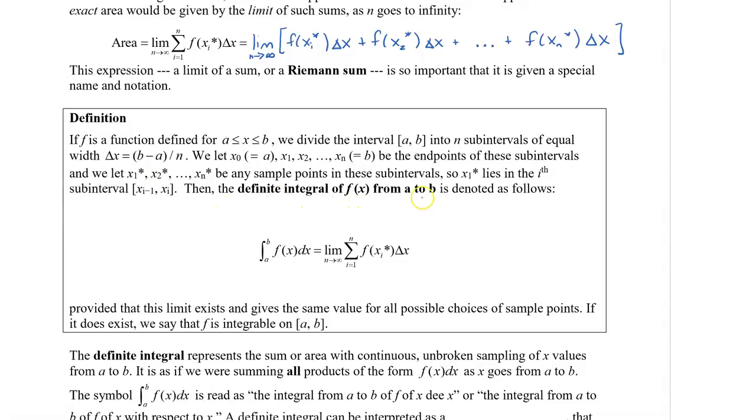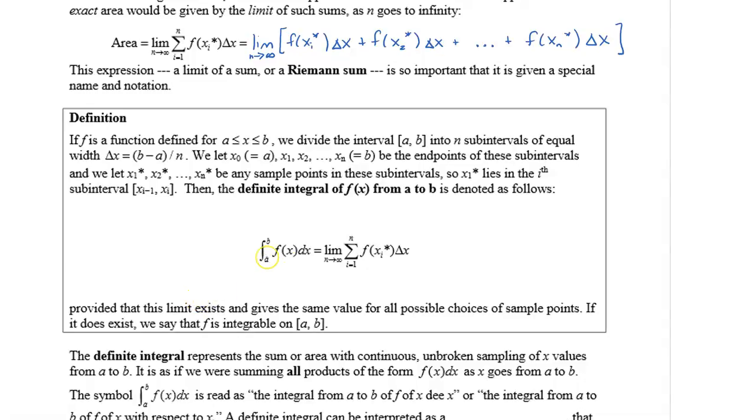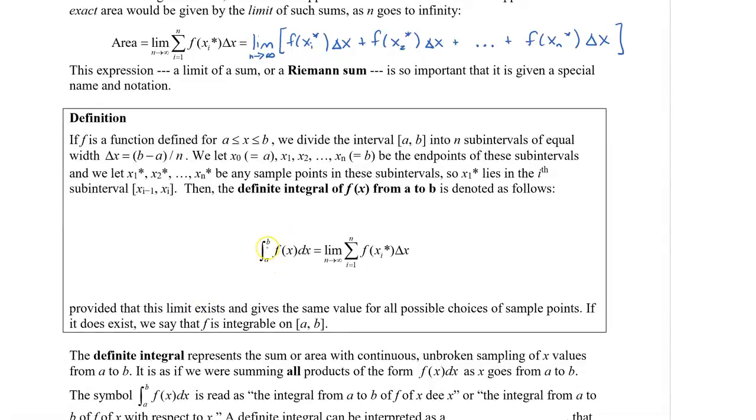Then the definite integral of f of x from a to b is denoted as follows. And this is what it looks like. Now I know this definition is very complicated, but you don't really need to know exactly what this definition is, but you do need to understand what this symbol here is. So this means that we have the integral from a to b of f of x dx, which actually stands for the limit which I described above. Now this limit has to exist and it has to give the same value for all possible choices of sample points within that interval or within that little rectangle. If it does exist, we say that f is integrable on a to b.